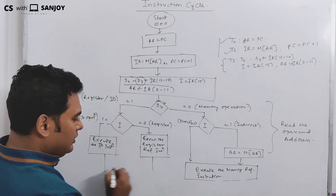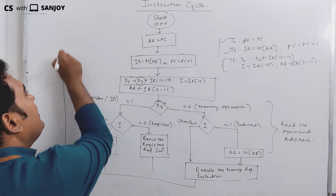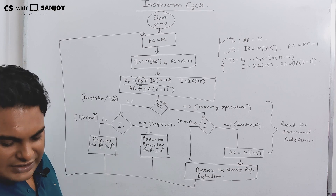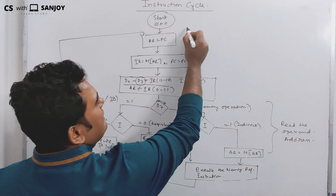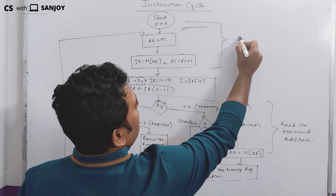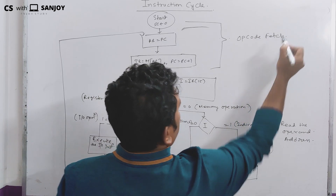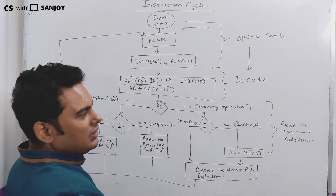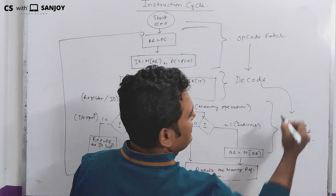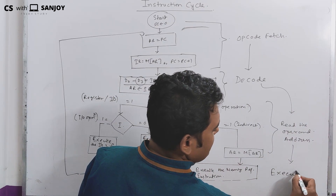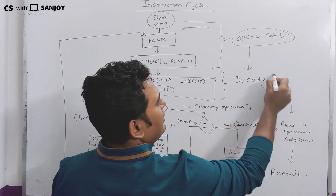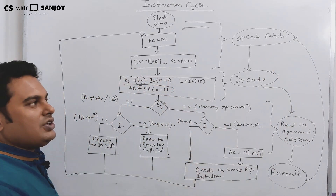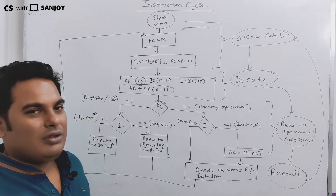After execution, it moves back to the start: re-fetch, re-decode, re-read the operand address, and re-execute. So the cycle is: fetch, decode, read the operand address, and execute. Again it moves back to fetch, decode, read the operand address, and execute. This is all about the instruction cycle — how an instruction executes inside a system.